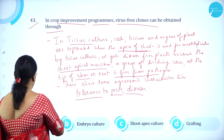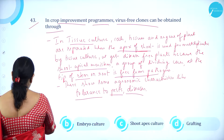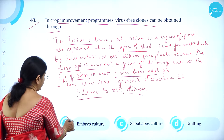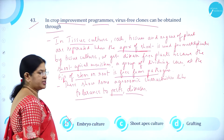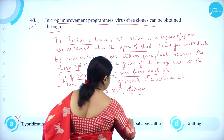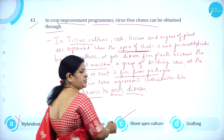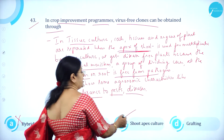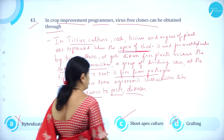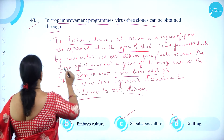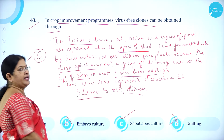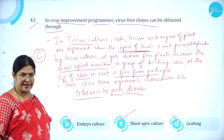Option A, hybridization — wrong. Option B, embryo culture — wrong. Option C, shoot apex culture — correct. Option D, grafting — wrong. So option C is correct.